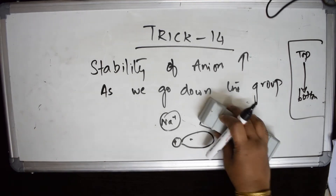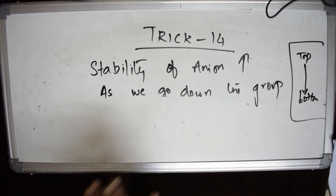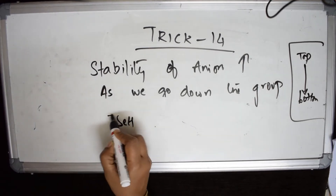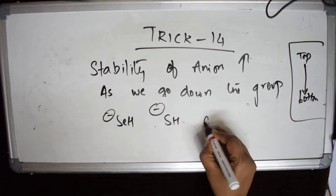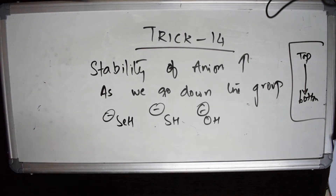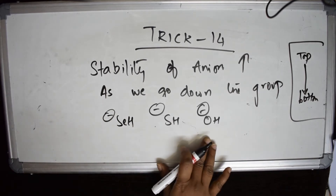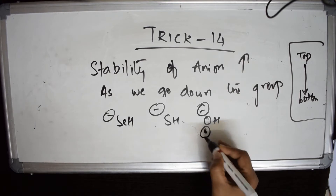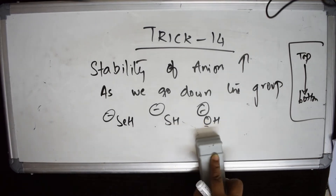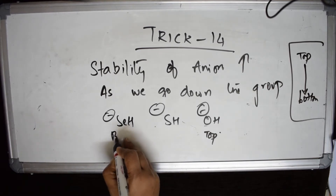So if the exam gives examples to order by stability of anions, I remember: stability of the anion increases down the group. Suppose the examples given are SeH⁻, SH⁻, and OH⁻. I check the atomic numbers: oxygen is 8, sulfur is 16, selenium is 34. They go from top to bottom in the group, so oxygen is at the top and selenium is at the bottom of the periodic table.